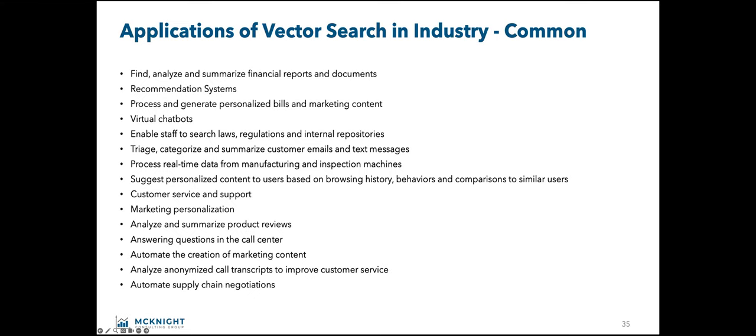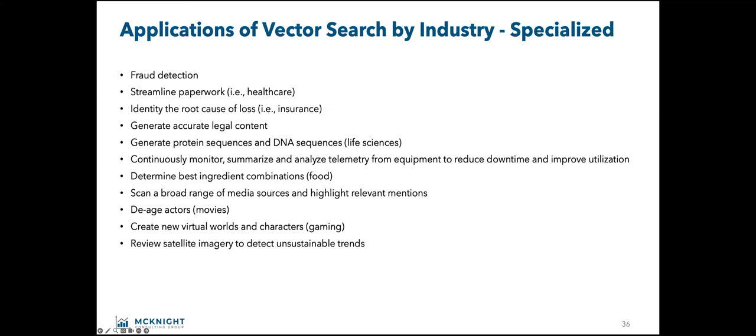These are some general applications for most industries — most all of us will have most of these needs in our organization. It can be useful in a variety of contexts such as natural language processing and recommendation systems. Some of the more common ones that we seem to all be doing: chatbots, marketing personalization, summarization of product reviews, and autoresponders — that's all vector. There are also more specialized industry-specific questions: healthcare-oriented, life science-oriented, food. These are the most common uses right now.